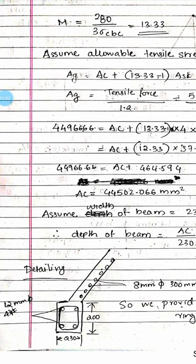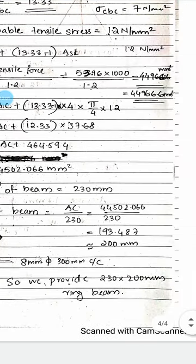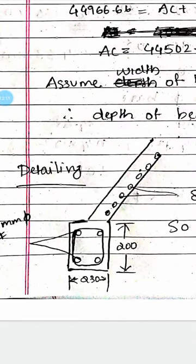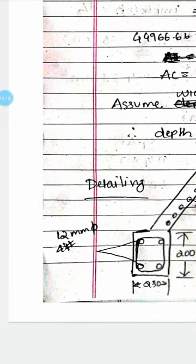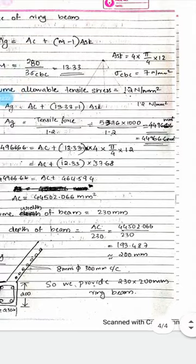AST equals 4 × π/4 × 12², giving 452.16 mm². Assuming the width of the ring beam is 230 mm, the depth equals AG divided by 230, giving approximately 195 mm, which we round up to 200 mm. The ring beam size is 230 mm × 200 mm with 4 bars of 12 mm diameter and 8 mm stirrups at 300 mm center to center.